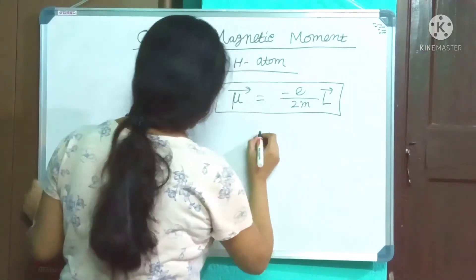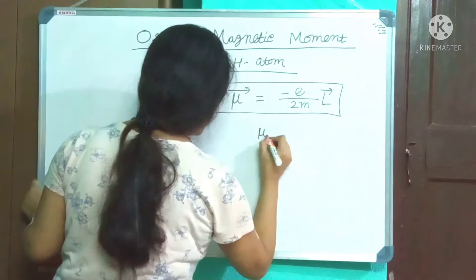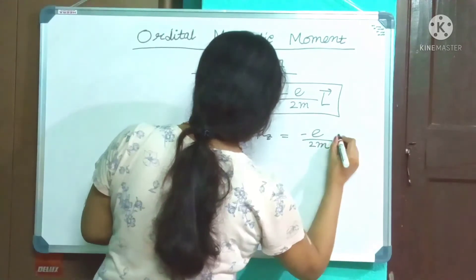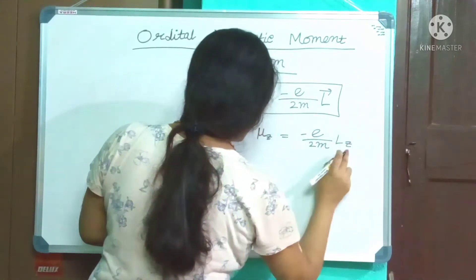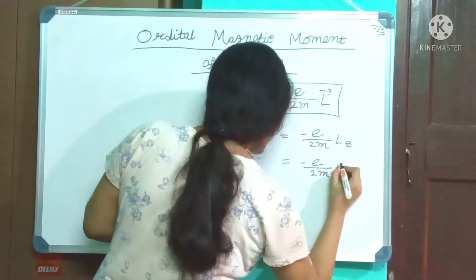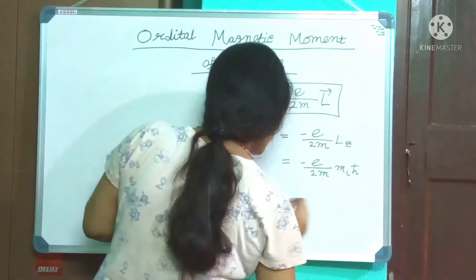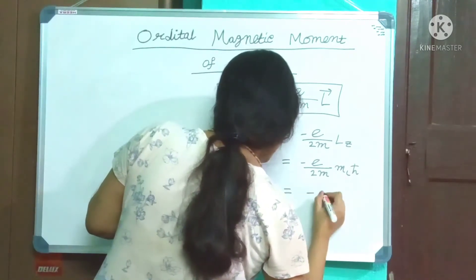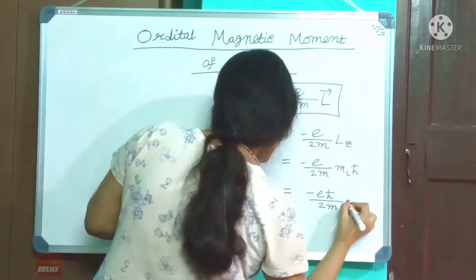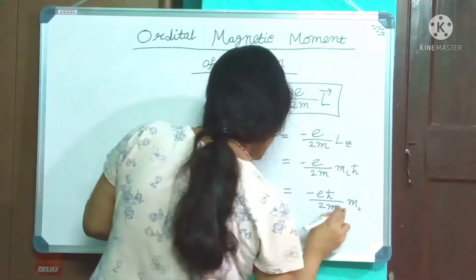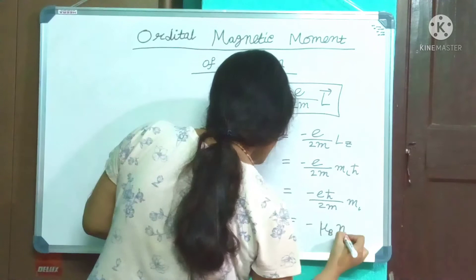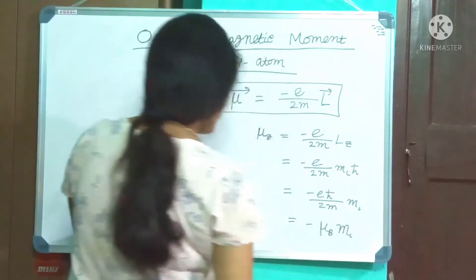Now, the z-component of the magnetic moment, μ_z, equals minus e/2m × L_z. Since L_z equals m_L × ħ, we get μ_z equals minus eħ/2m × m_L, which equals minus μ_B × m_L.